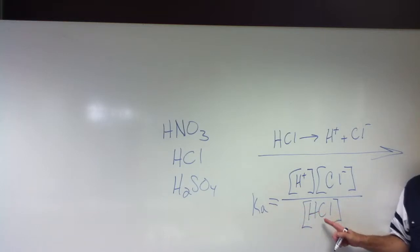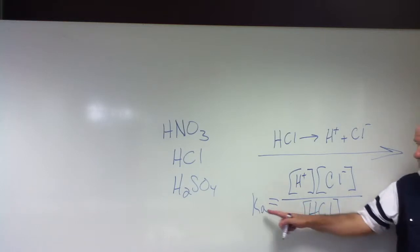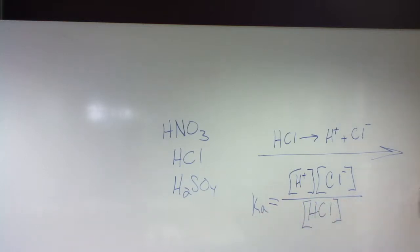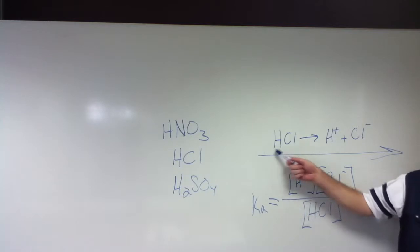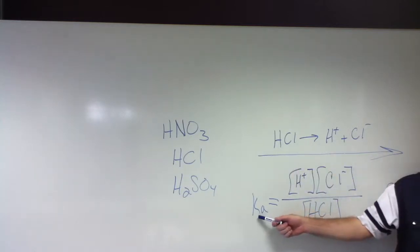So as that approaches zero, what does that approach? Infinity. So as that approaches zero, because that's going to go to completion, that Ka gets very large. But once it reaches zero, it can't exist. No, it exists.